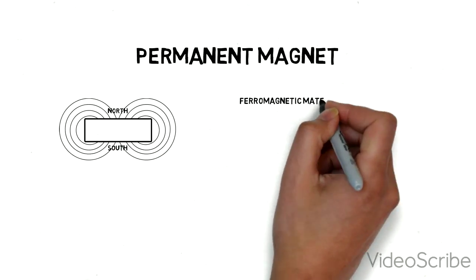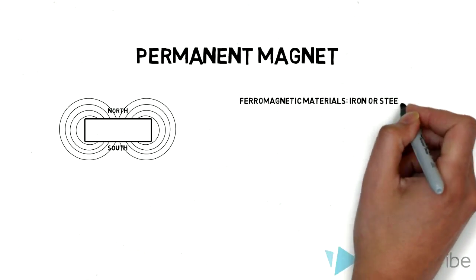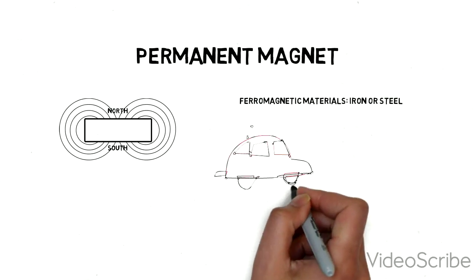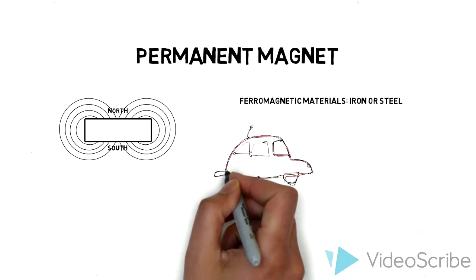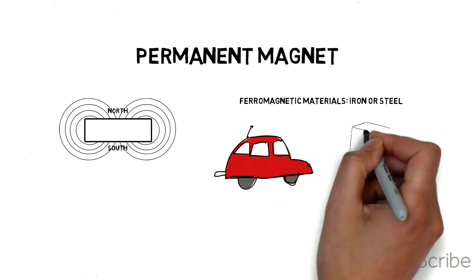All magnets have two poles, north and south. They stick to ferromagnetic materials like iron and things that contain iron, like steel. This can include anything from your car's steel body to your refrigerator door.